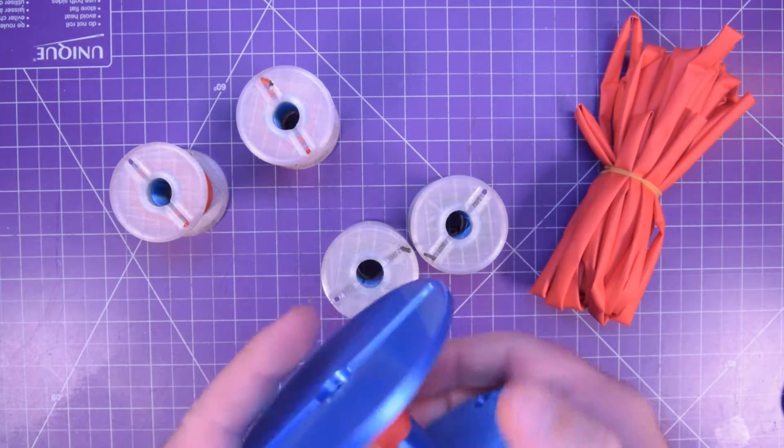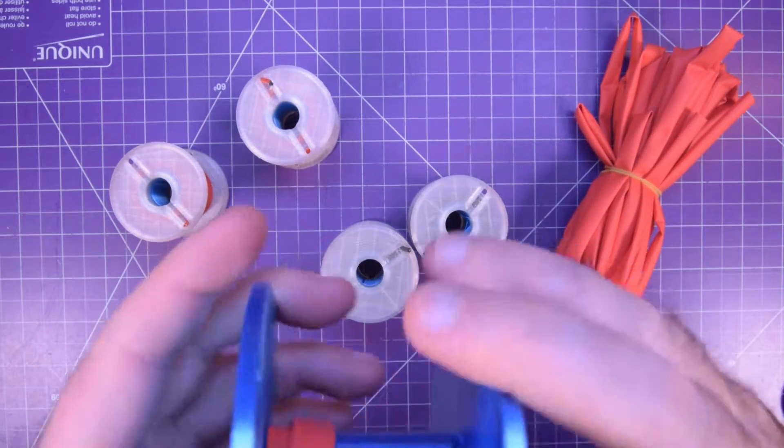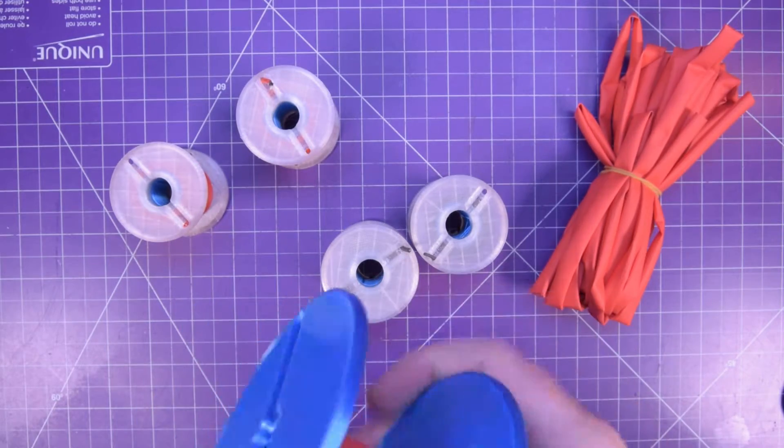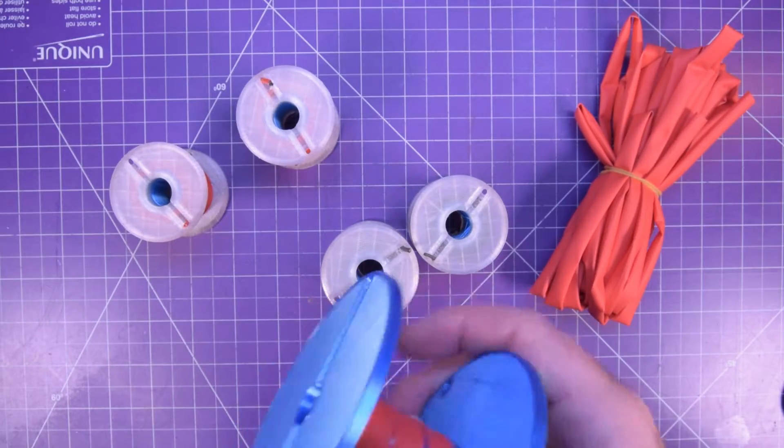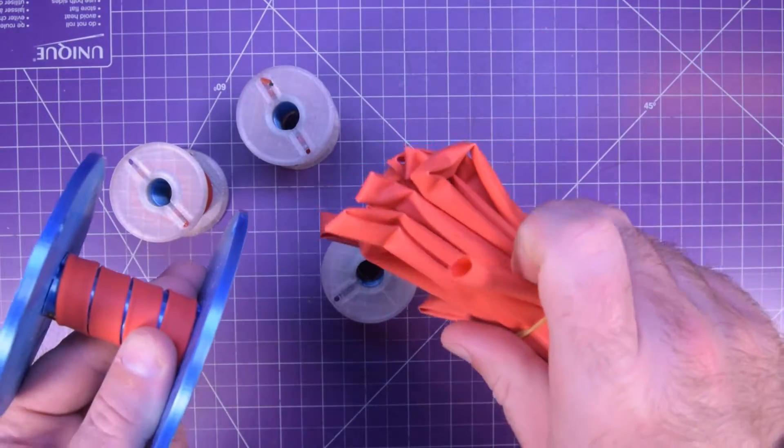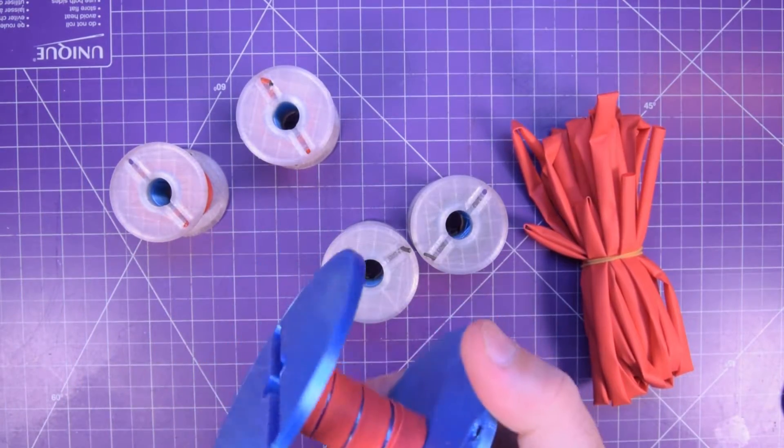And then I can spool this up however I want. This will stay way more tidy, especially as soon as I can figure out a nice rod mounting system, which might be another 3D print. I'm just going to spool this up. And when I get to the end of this, I'm going to tape the end of this one on and continue the spool.